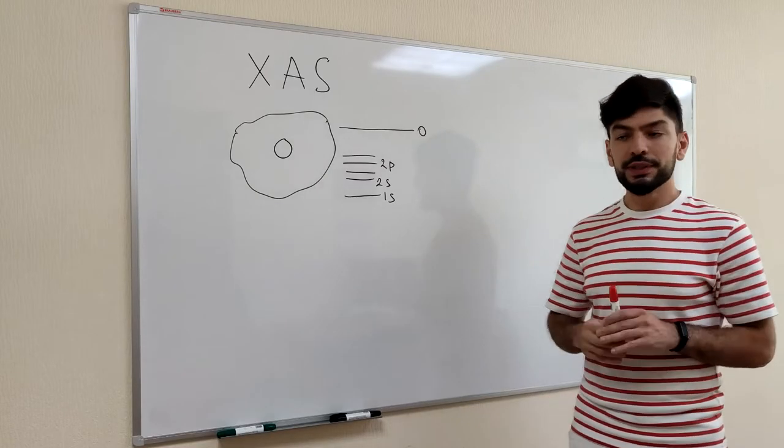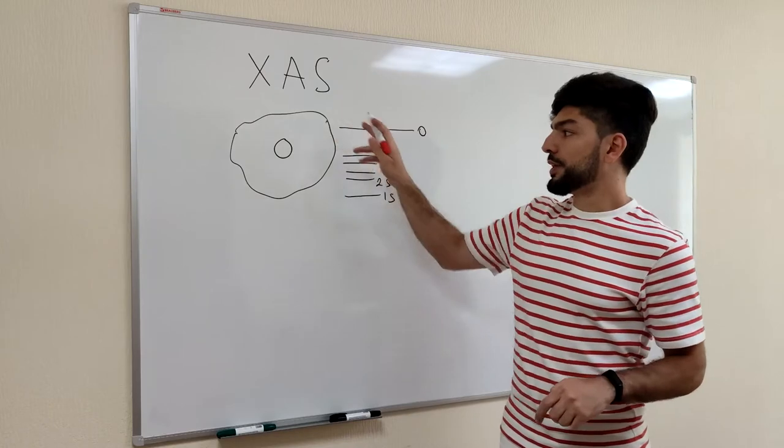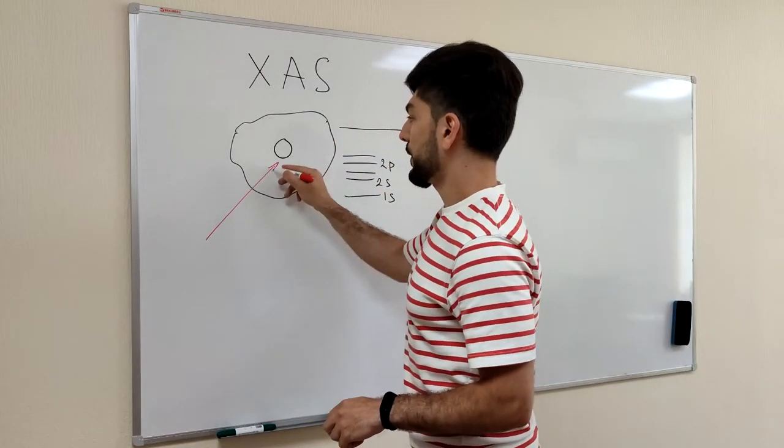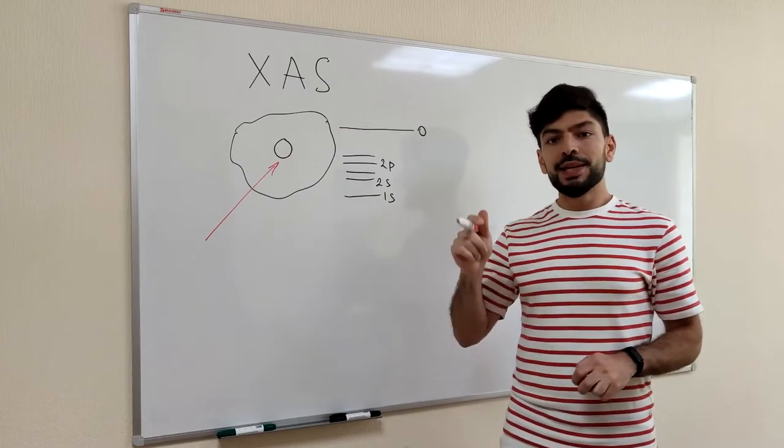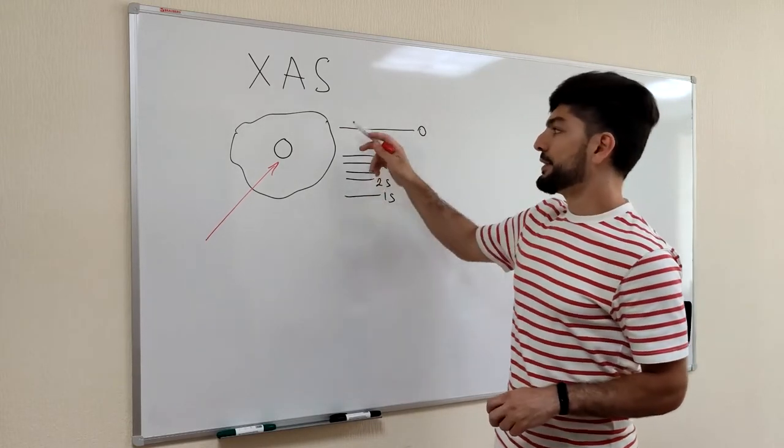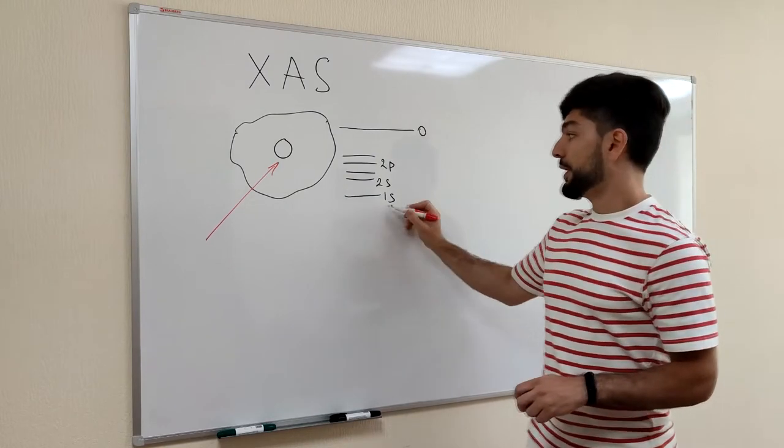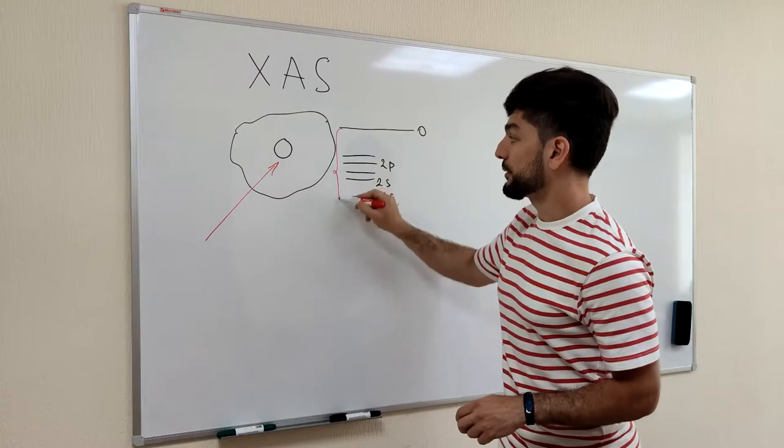What happens if we expose this matter to a photon beam, with the photon energies slightly higher than the ionization potential of one of the core electrons, let's say 1s electron.